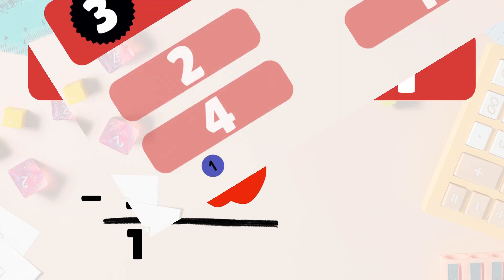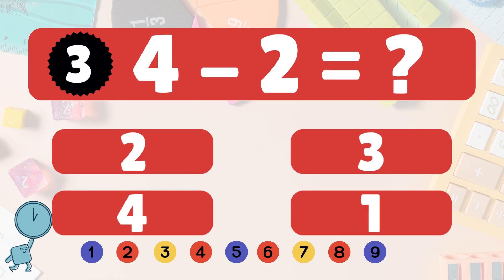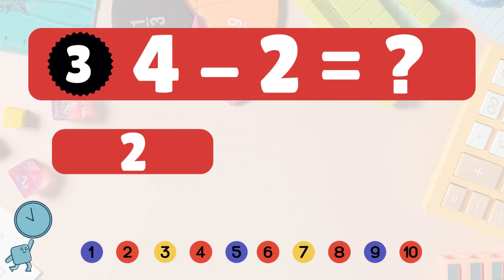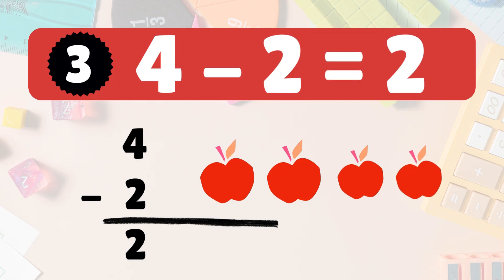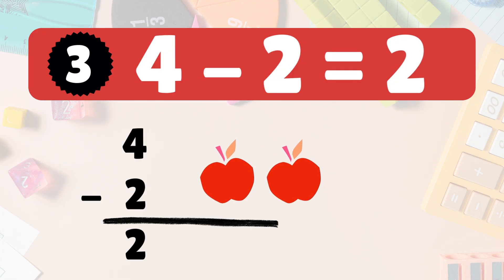Great job! Next, 4 minus 2 equals what? 4 minus 2 is 2. Here we have 4 apples. Take 2 away — 2 apples left: 1, 2. So 4 minus 2 is 2.